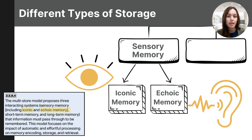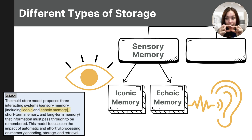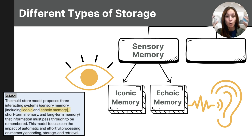Sensory memory can be further broken down into iconic memory and echoic memory — the storage systems within your sensory memory that hold incoming visual and auditory information. Iconic memory is the sensory storage for visual information. I remember this because when I think of an icon, I think of that small graphic symbol you see on your phone or computer screen — a visual image. Echoic memory is the storage for auditory information that goes in through your ears, held briefly and then immediately replaced with new information.